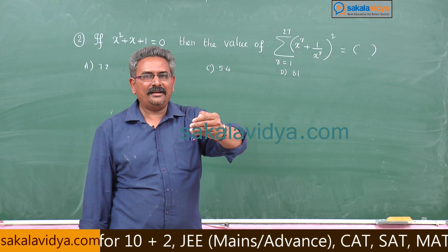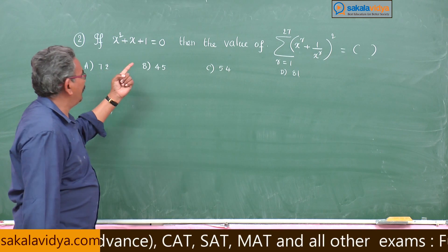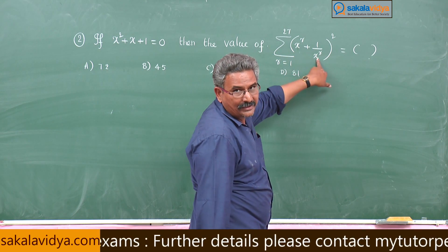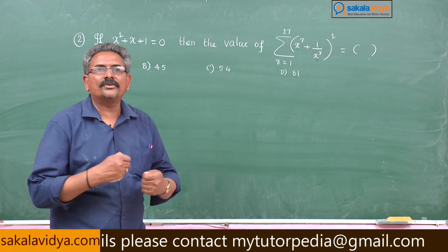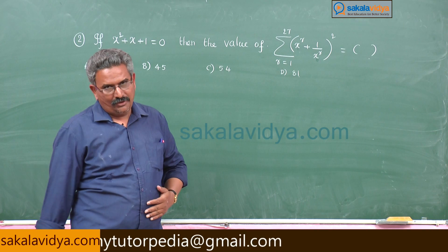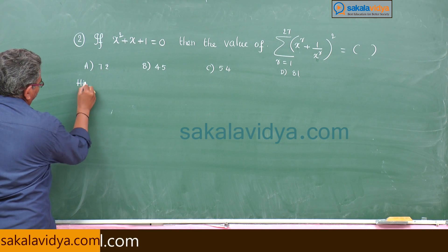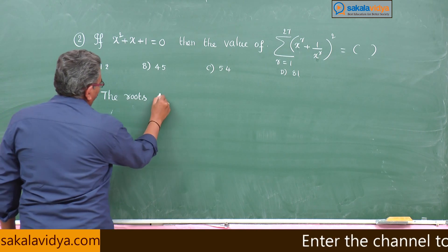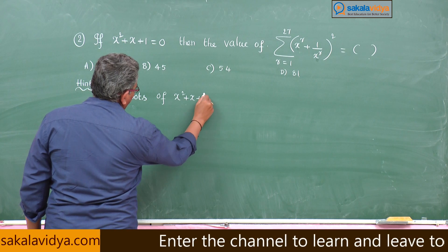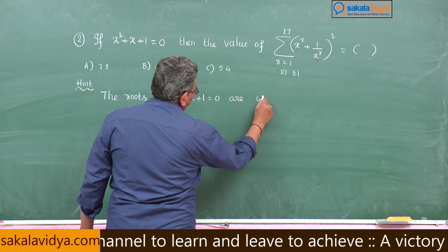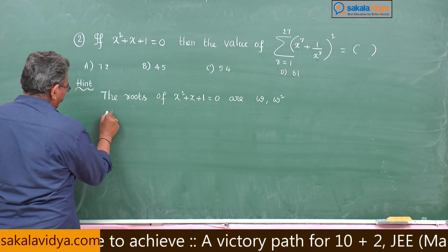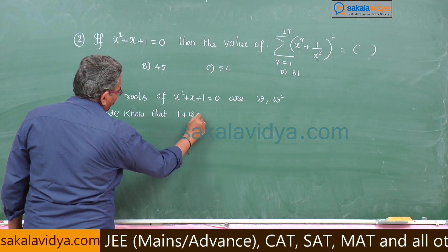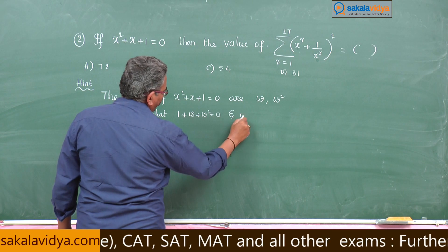That means x is equal to omega or omega square. Since x equals omega and omega square, substitute x as omega. We know that 1 + ω + ω² = 0 and ω³ = 1.